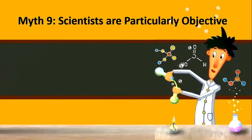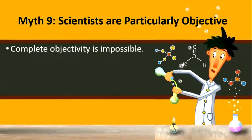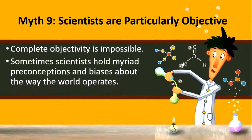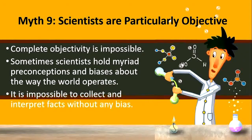Another very important myth is that scientists are particularly objective, meaning they don't think subjectively and work only objectively. But dear teachers, you should remember that complete objectivity is impossible in practice. Even sometimes scientists hold preconceptions and biases about the way the world operates, and it is impossible to collect and interpret facts without any bias. This myth also needs to be dispelled from the minds of our young science learners.